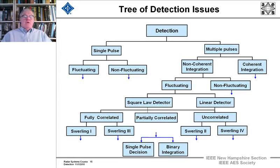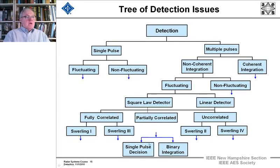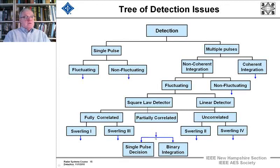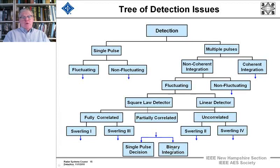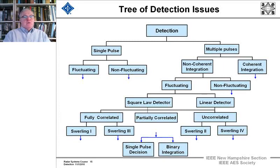The Swerling classes also have to do with whether the fluctuations are from pulse to pulse or from scan to scan. After combining the data into one single entity — whether coherently integrating a bunch of pulses — you have to make a decision or use binary integration. The next issues we'll deal with are the different kinds of integration, and then we'll spend a good chunk of time on target fluctuations.